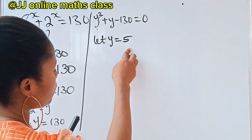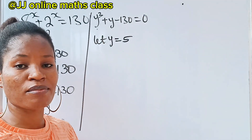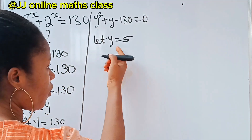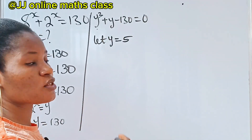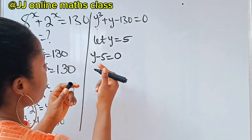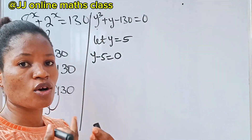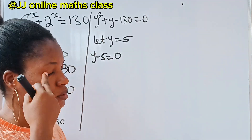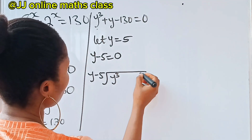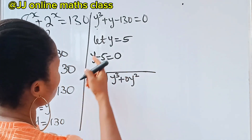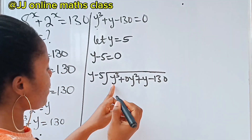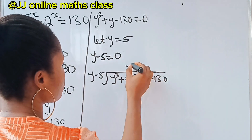We bring y minus 5 to become a factor equal to 0. We are going to use this factor to divide the cubic to get the other factor, which will be a quadratic equation. So we write: (y minus 5) divides y cubed plus 0y squared plus y minus 130. Dividing y cubed by y gives y squared.